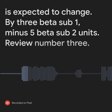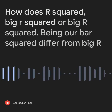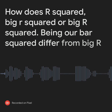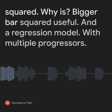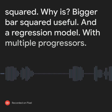Review number 3. How does R bar squared (adjusted R squared) differ from R squared? Why is R bar squared useful in a regression model with multiple regressors?